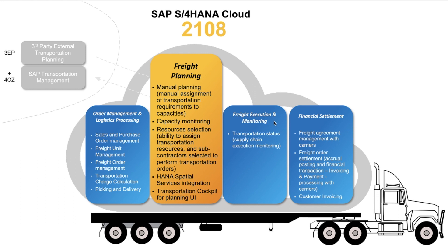In terms of the end parts of the process, this really hasn't changed — it was available before and still is. You have the ability to report events in the system to track the execution of your freight orders, and then close up the processes financially with your carriers by receiving their invoices and paying them. You can also set up a self-billing process if that is what you wish and have negotiated with your carriers.